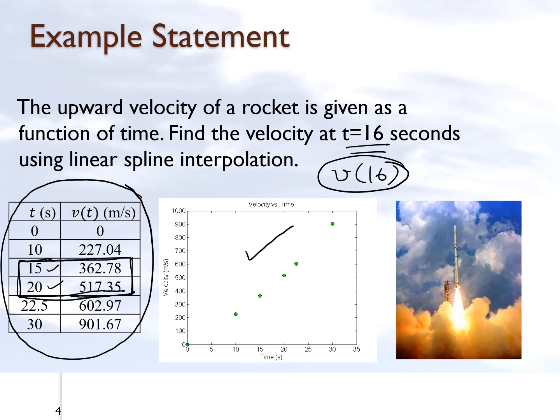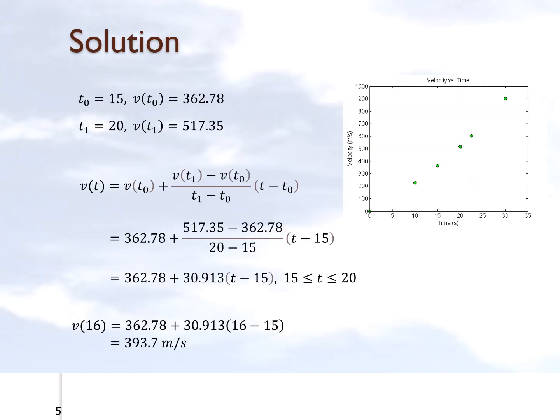So the solution involves finding the straight line approximation of the velocity from 15 to 20, which is this one right here. We take the velocity at 15, velocity at 20, and we put it into this particular equation.